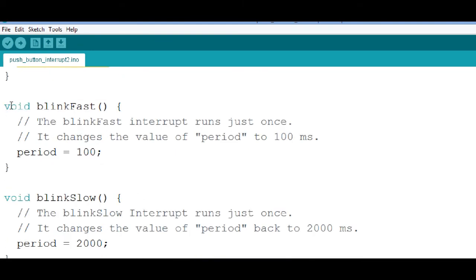Then, here's our interrupt called blinkFast. And the only thing we do here is change the period to 100 milliseconds. So we do the interrupt and jump right back to the loop.